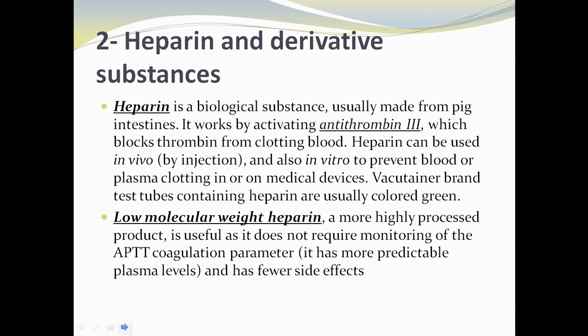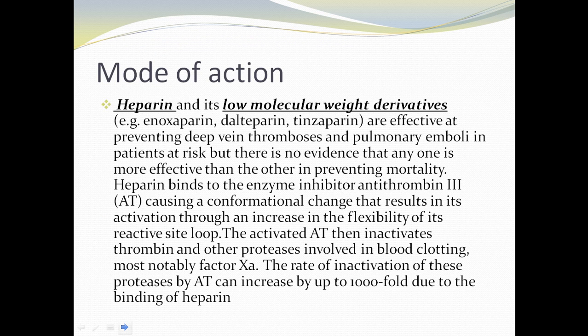Low molecular weight heparin is a more highly processed product. It is useful as it doesn't require monitoring of the activated partial thromboplastin time coagulation parameter, has more predictable plasma levels, and has fewer side effects. Heparin and low molecular weight derivatives are effective at preventing deep vein thrombosis and pulmonary emboli in patients at risk. Heparin binds to the enzyme inhibitor antithrombin 3, causing conformational changes that increase the flexibility of its reactive site loop. The activated antithrombin then inactivates thrombin and other proteases involved in blood clotting, most notably factor Xa. The rate of inactivation can increase by up to 1000-fold due to heparin binding.